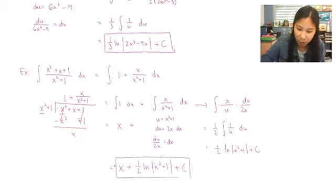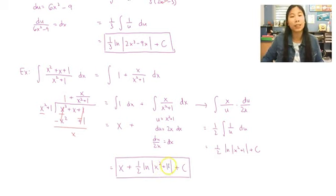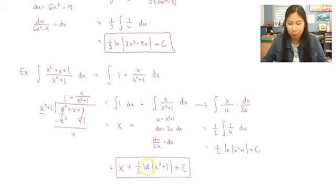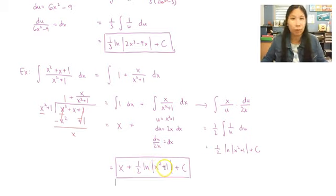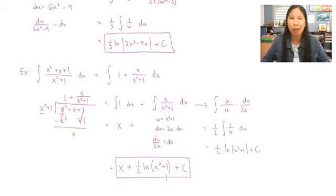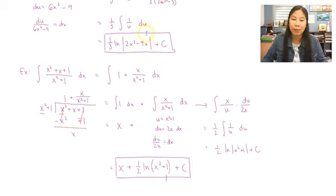One thing worth noting: the absolute value signs in this answer are not necessary. Since x² is always non-negative and we add 1, x² + 1 is always positive regardless of what x is. So the natural log will never receive a negative input here, and we can write plain parentheses instead. This is unlike something like 2x³ - 9x, which can be negative, so absolute value signs were required there.